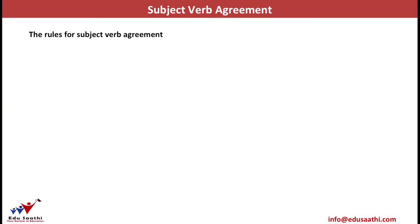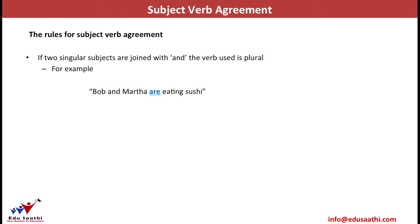Now we'll discuss rules to judge what verb should follow a subject. Rule 1: if two singular subjects are joined with 'and,' the verb must be plural. For example, 'Bob and Martha are eating sushi.' Asking 'who is eating sushi?' gives Bob and Martha — two subjects, which is plural, so we write 'are.' If it were just Bob, the singular subject takes 'is': 'Bob is eating sushi.'